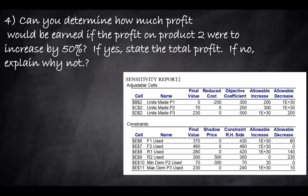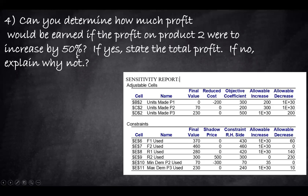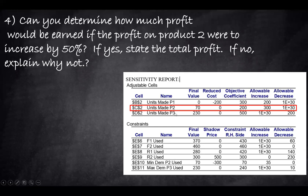Next question: can you determine how much profit would be earned if the profit on product P2 were to increase by 50%? If yes, state the total profit; if not, explain why not. This deals with the sensitivity report — it's asking how a 50% increase in the coefficient of P2 impacts total profit. The first step is to look at the sensitivity report on the correct row, which is the row for product P2.